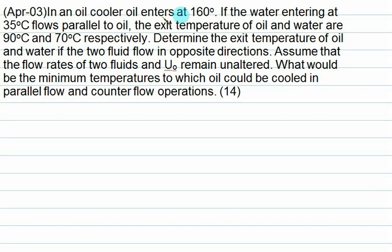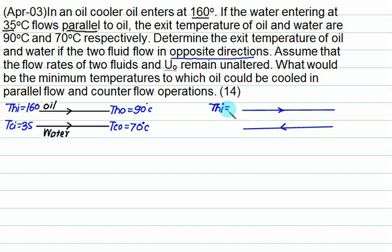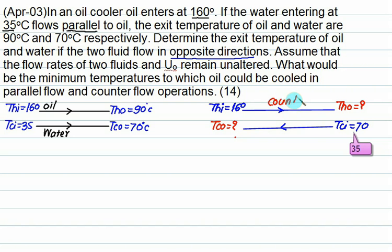Third question: an oil cooler. Oil enters at 160 degrees Celsius (hot fluid) and water enters at 35 degrees Celsius (cold fluid). For parallel flow, oil enters at 160 and exits at 90, water enters at 35 and exits at 70. We also need to find the temperatures of oil and water if both fluids flow in opposite directions (counter flow) with the same inlet conditions: Thi equals 160, Tci equals 35. Assuming flow rates, U0, and area remain constant.